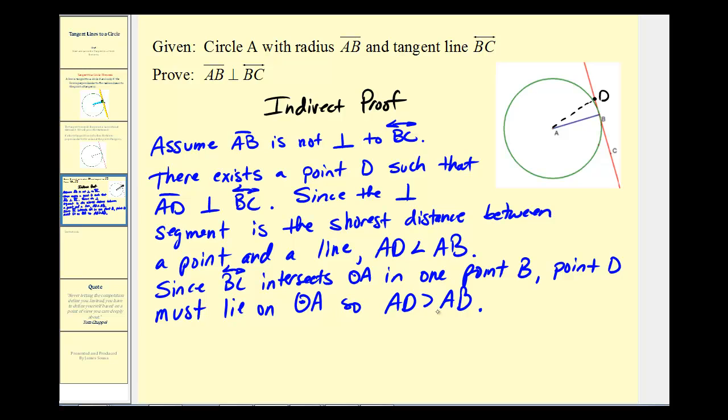Here's our contradiction: the length of AD being greater than the length of AB contradicts what we said above, that AD is less than AB. Therefore, our assumption must be false.